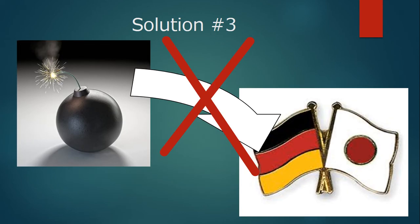The third is the abolition of the enemy clauses. Currently only Japan and Germany are disadvantaged, and these clauses allow many countries to attack them without a Security Council decision. I felt that the UN should abolish such an anomaly immediately, and also abolish any articles that support a specific country.